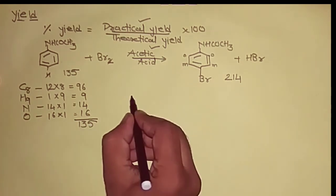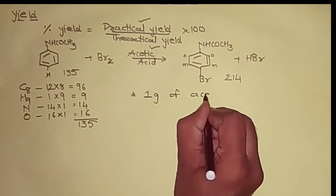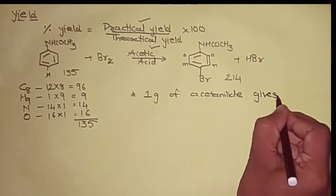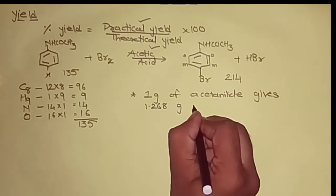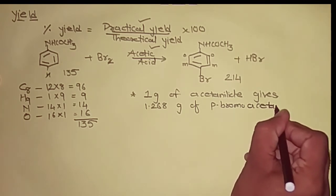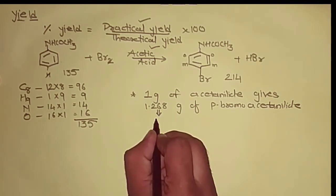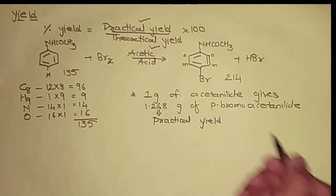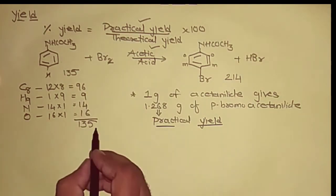Now, along with this one more condition is given: 1 gram of acetanilide gets 1.268 grams of parabromoacetanilide. Whatever amount of product is obtained, this product we call it as practical yield. Now what part is remaining? Only theoretical yield. Now how will we calculate theoretical yield?